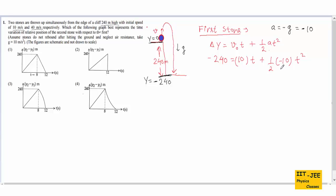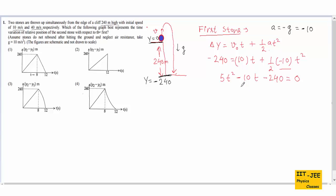Rearranging all terms to the left side gives the quadratic equation: 5t² minus 10t minus 240 equals 0. Solving this — either by factoring or using the quadratic formula — we get t equals 8 seconds. So the first stone takes 8 seconds to reach the ground.